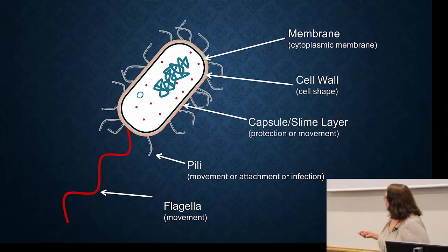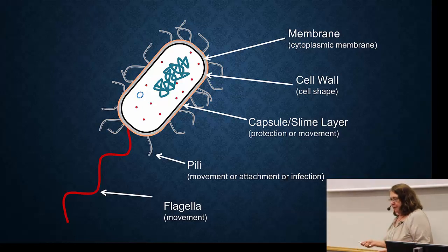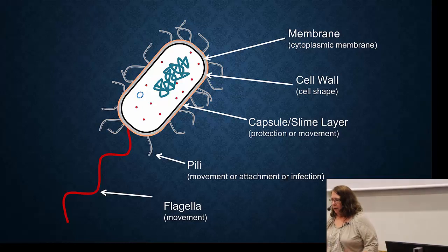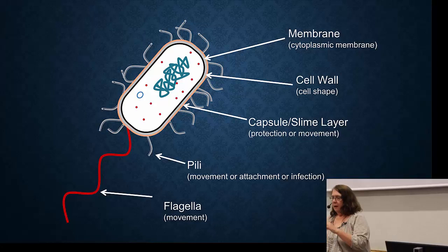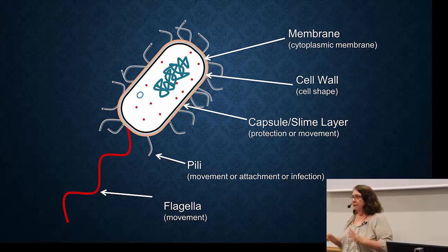The other type of structure is called pili. Pili are also used for a number of different functions, including movement, attachment, and infection. Pili are short, relatively short appendages that come off the cell. They can be very stiff — straight lines coming off — or kind of wavy and flexible.